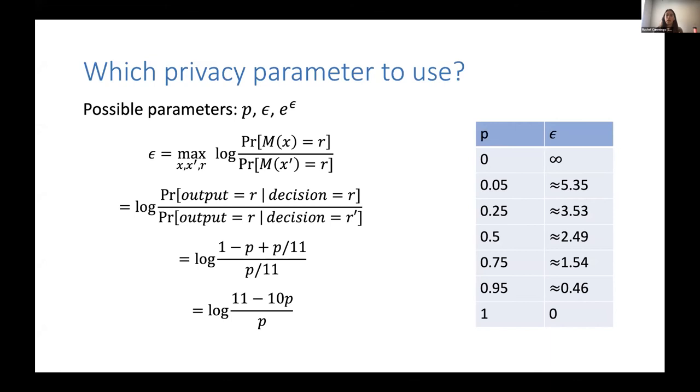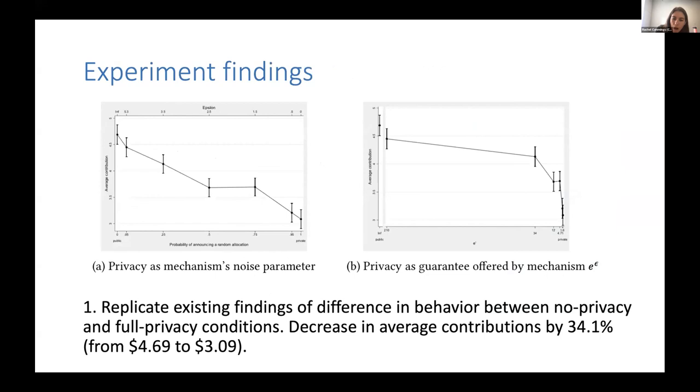And before we can actually plot these things from our experiment we have to think about how to think about what is the appropriate privacy parameter to use. And we might have this organic parameter in the experiment p, we might have our differential privacy parameter epsilon, or we might have this bound on the ratios e to the epsilon. And for time I will skip this part but this basically shows how you go from the p to the epsilon and it's four lines of math and it's very simple. But effectively our p values roughly correspond to these epsilon values ranging between infinity to zero. In between we have about half, one and a half, two and a half, three and a half, five and a half.